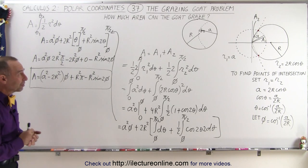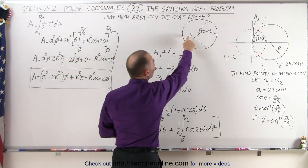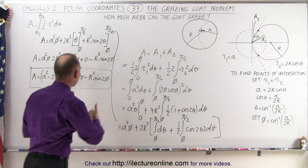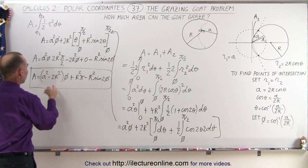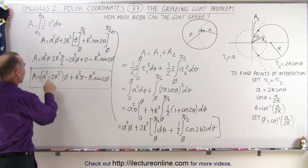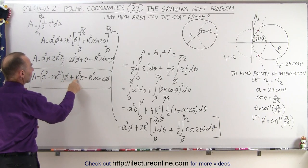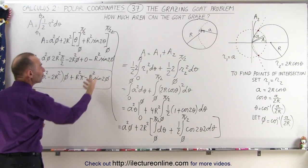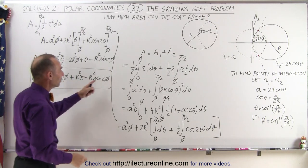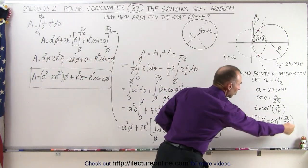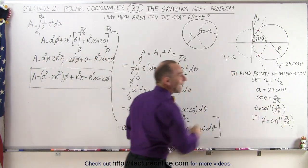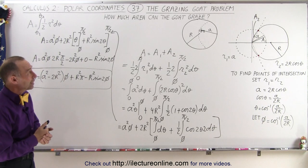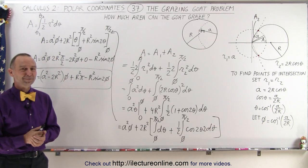Sometimes this problem is given with R = 1. All you do then is set R = 1, giving (A squared minus 1) times φ, and this becomes just π minus sin(2φ), where φ is defined by the ratio of A and R. And that's how we do the grazing goat problem.